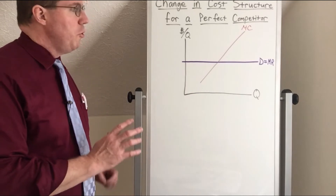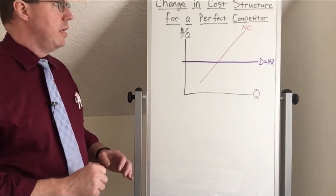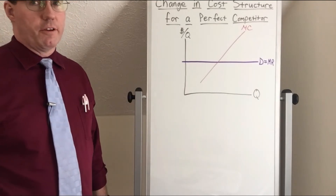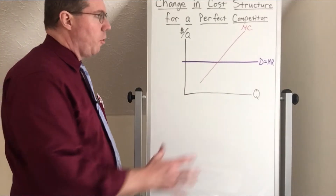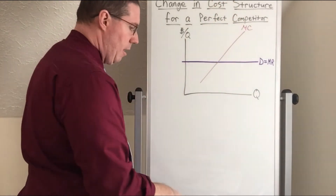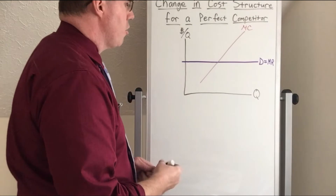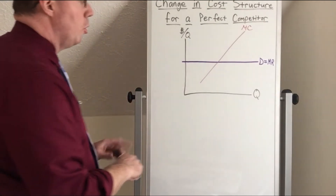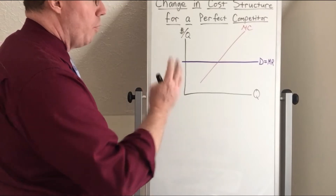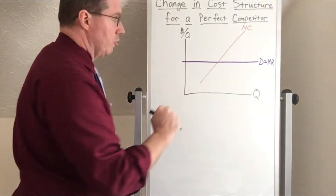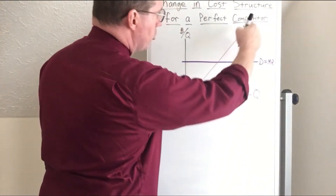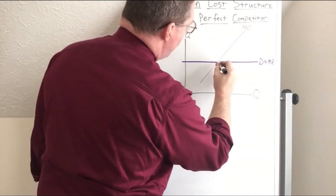I'm going to show you what happens when there is a change in the cost structure for a perfect competitor. All I've drawn on here is the demand curve with the marginal revenue curve and the marginal cost curve. The first thing we're going to talk about is what happens to the profit maximizing quantity when there's a change in marginal cost. Here is our profit maximizing quantity where marginal cost intersects marginal revenue.